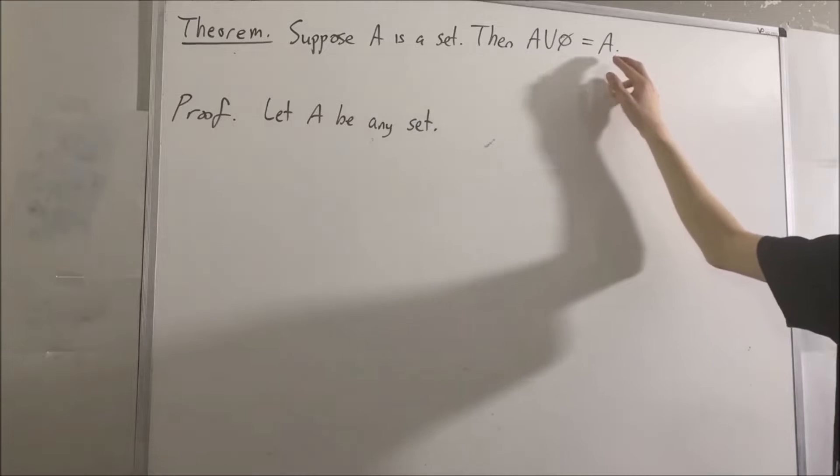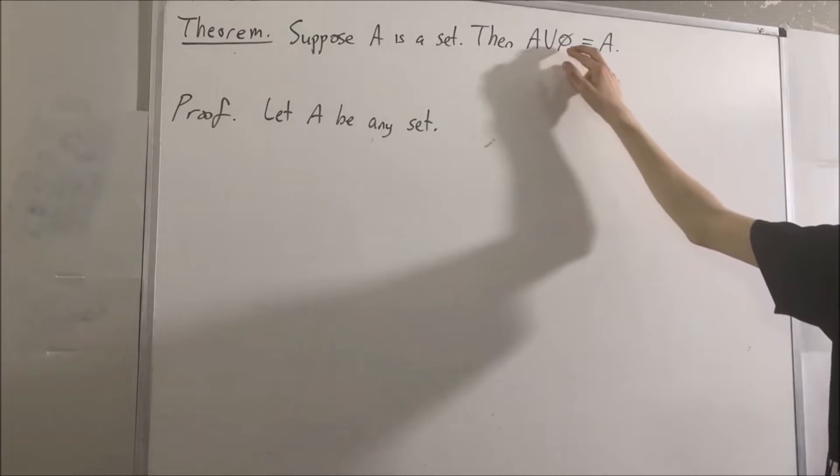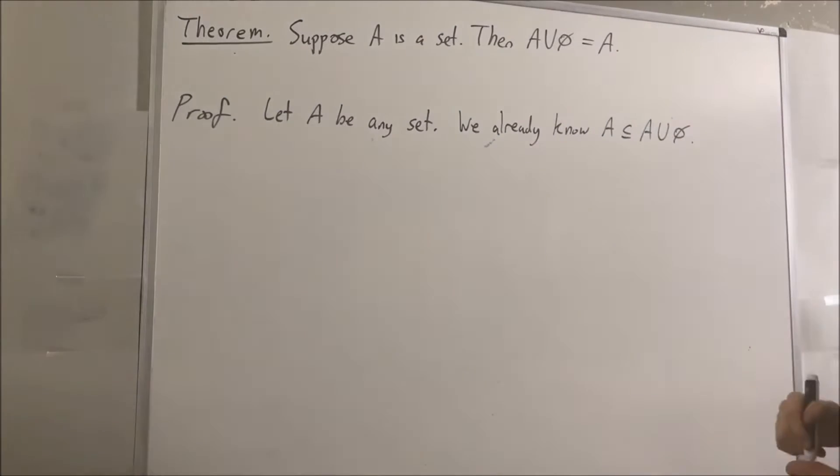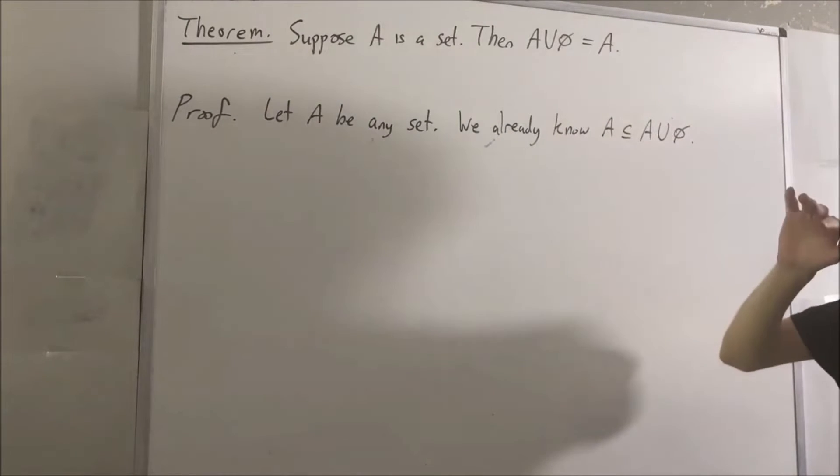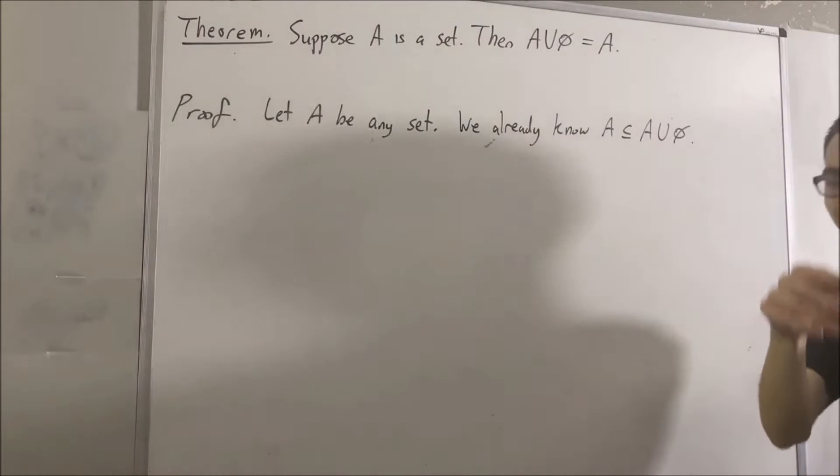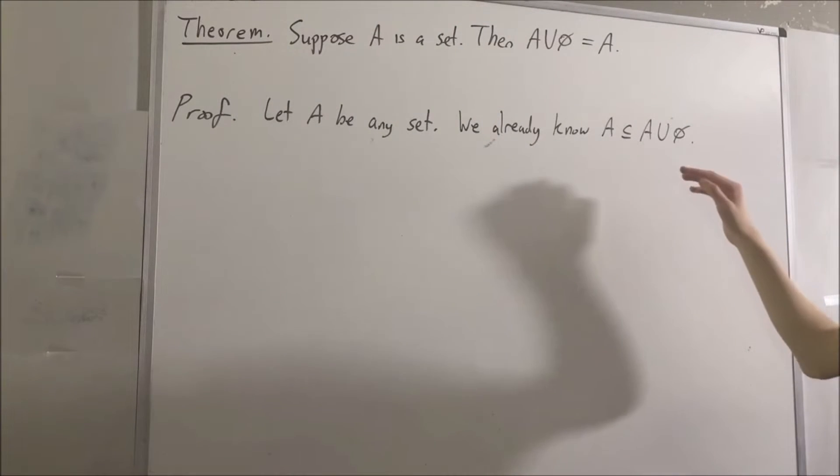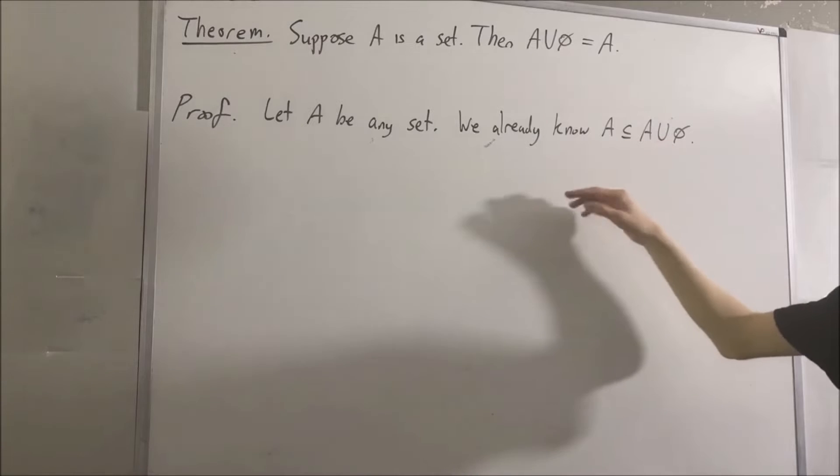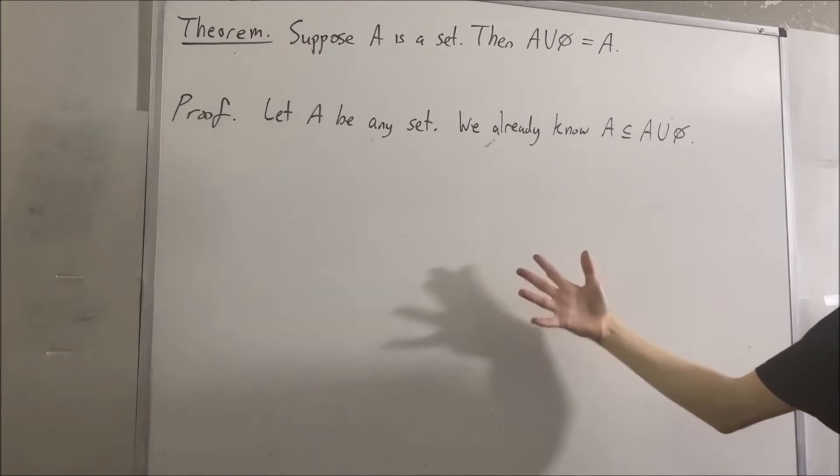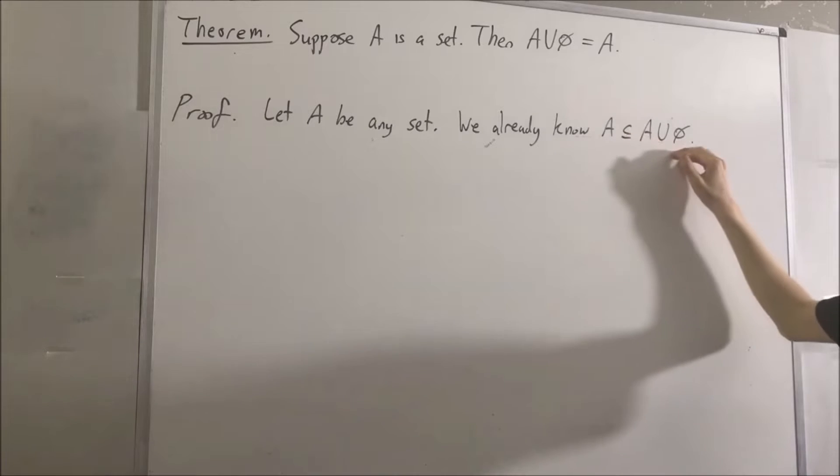But here's the thing. We already know that A is a subset of A union empty set. How do we know this? Well, because we already proved that in another video. What we proved was that for any two sets A and B, A is a subset of A union B. So we already know that this is true.